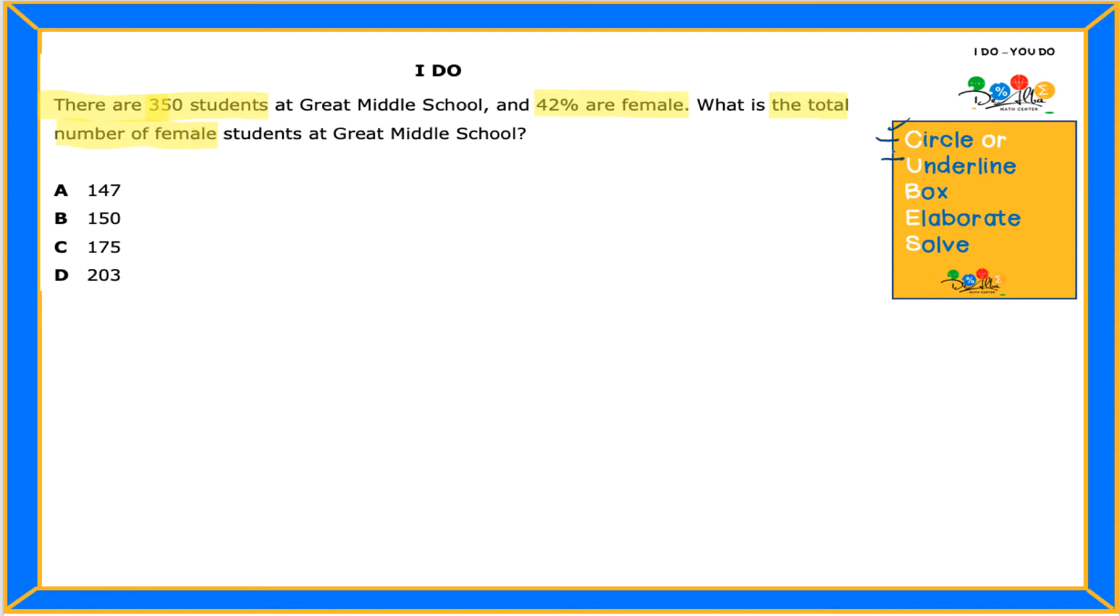We did underline or circle, in our case it's highlight. Now we're gonna box the question. Find the total number of female students. Since in this problem I have percent, like I see 42% female, they give me total, I'm gonna do the strategy of the proportion box.